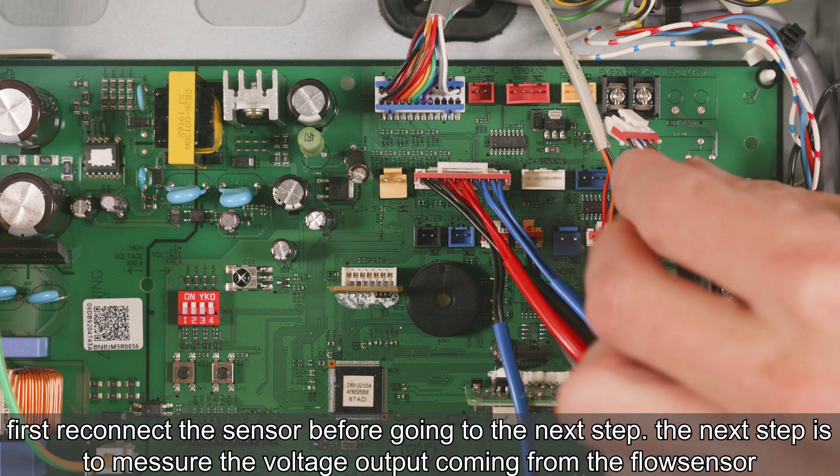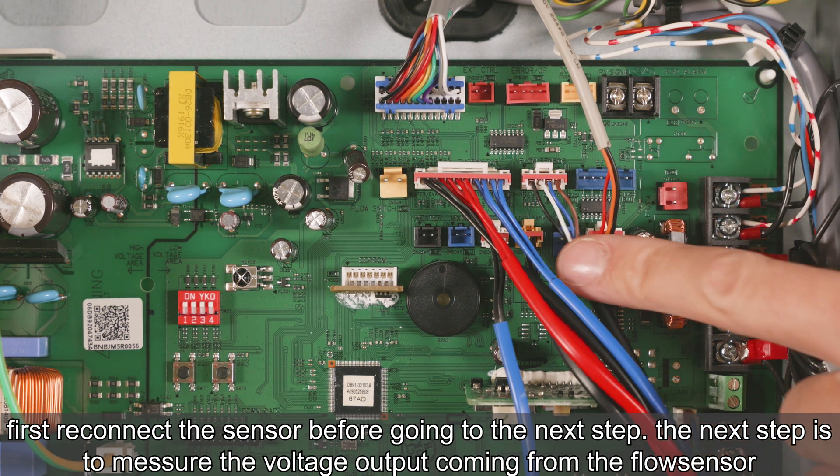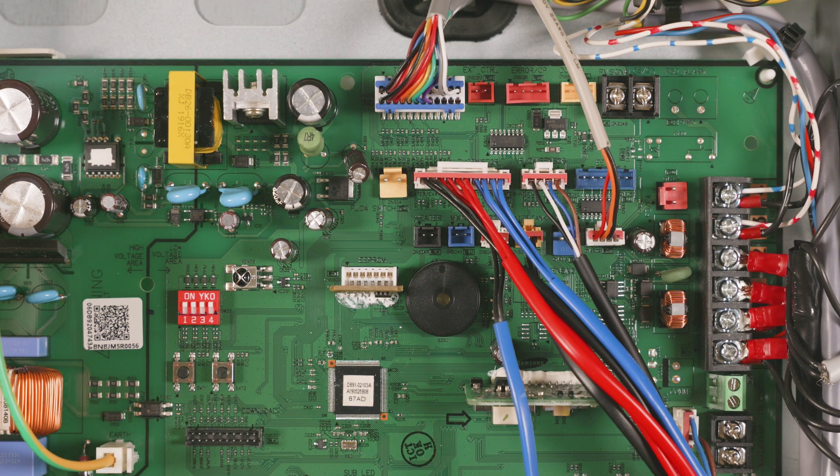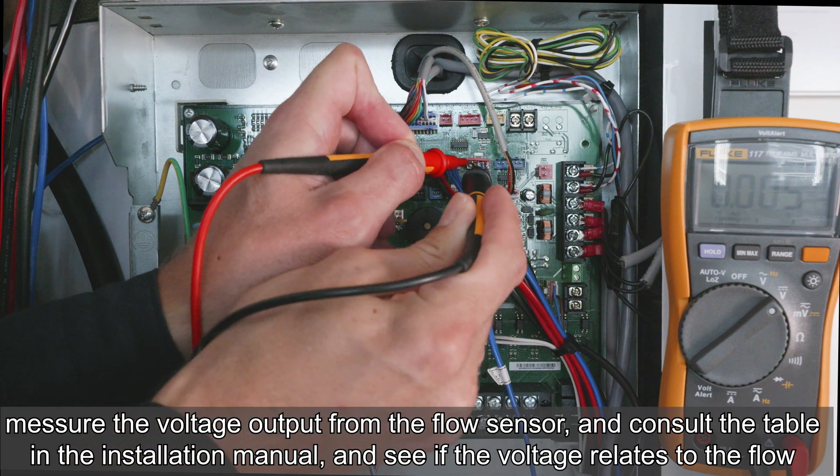First reconnect the sensor before going to the next step. The next step is to measure the voltage output coming from the flow sensor. Measure the voltage output from the flow sensor and consult the table in the installation manual to see if the voltage relates to the flow.